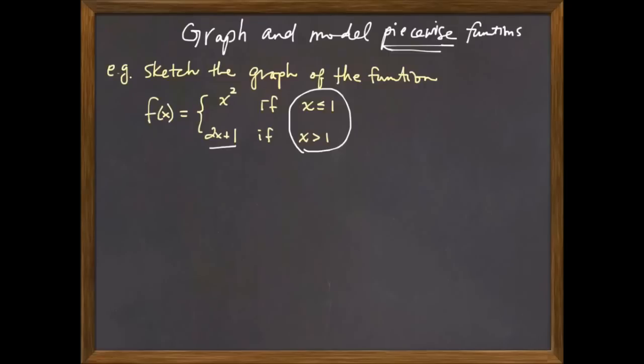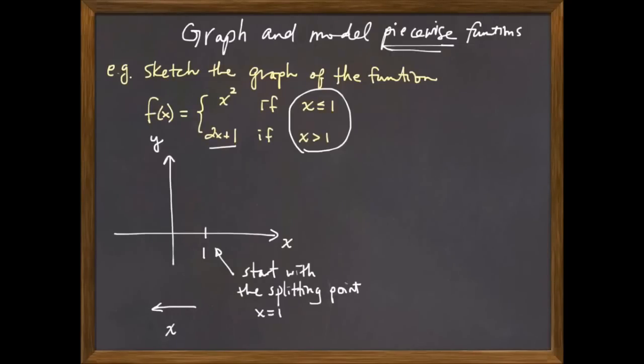So my suggestion to you is that once you lay down your coordinate system, you immediately identify where the splitting point is. In this case, x equals 1. And then you're going to realize that to the left of the splitting point, we're going to try to graph the equation y equals x squared, because that's the first piece. And then to the right of the splitting point, we're going to use the second piece, which is the y equals 2x plus 1.